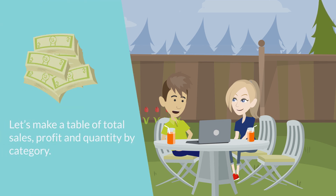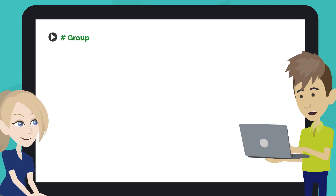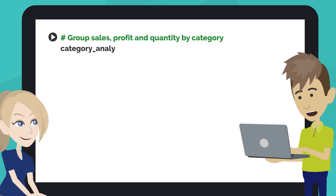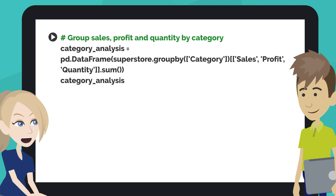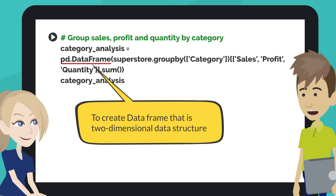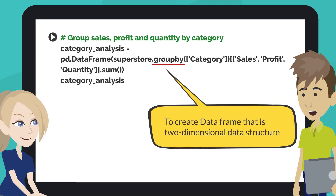Let's make a table of total sales, profit, and quantity by category. Type the code like this into the next code cell of your notebook. This code groups the total of sales, profit, and quantity by category and creates the table. Pandas DataFrame function creates a DataFrame, which is a two-dimensional data structure with data aligned in a tabular fashion in rows and columns. Pandas DataFrame.groupby function groups the data according to the categories and applies a function to the categories.